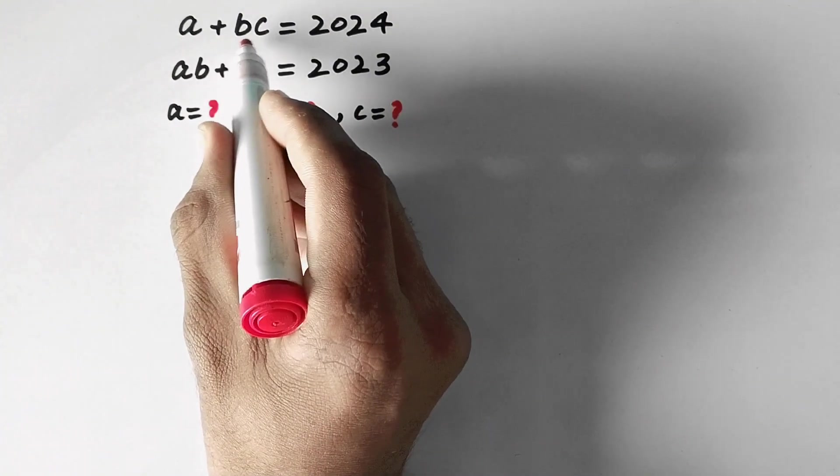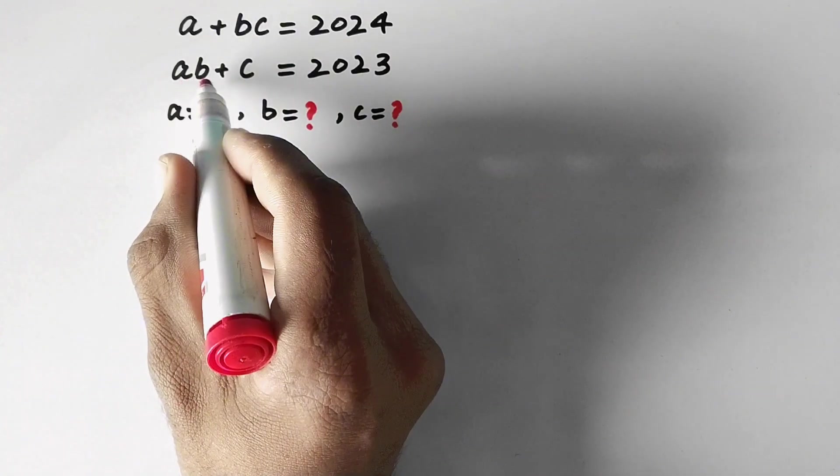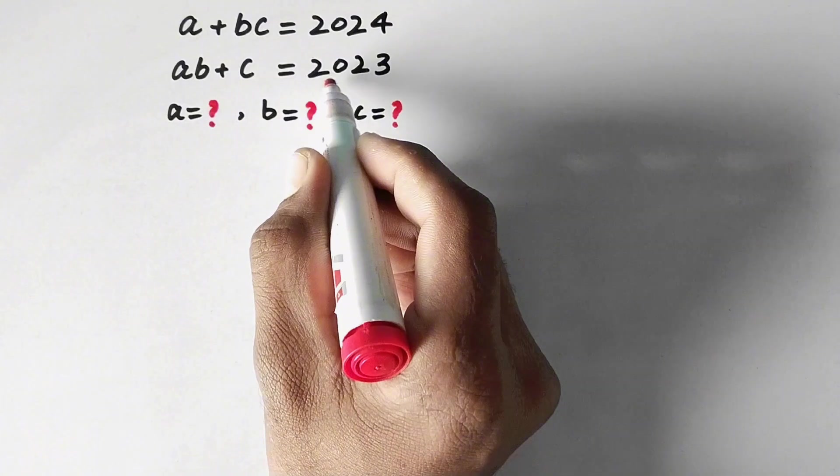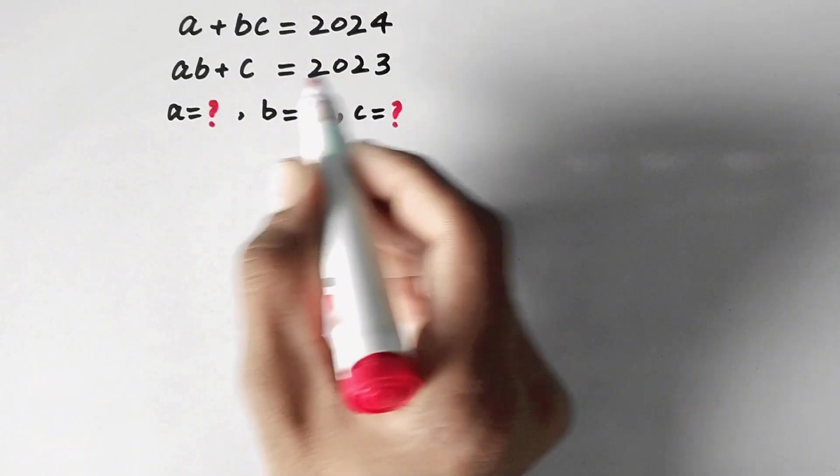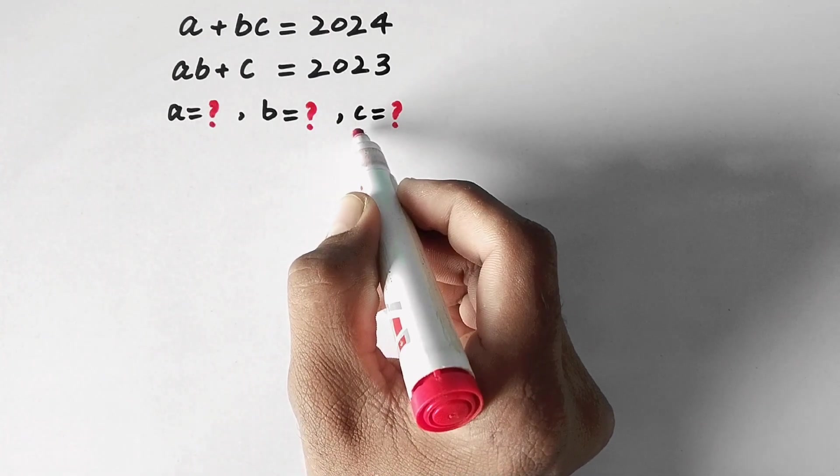We have two equations. A plus B times C is equal to 2024, and A times B plus C is equal to 2023. And we have to find the value of A, B, and C.